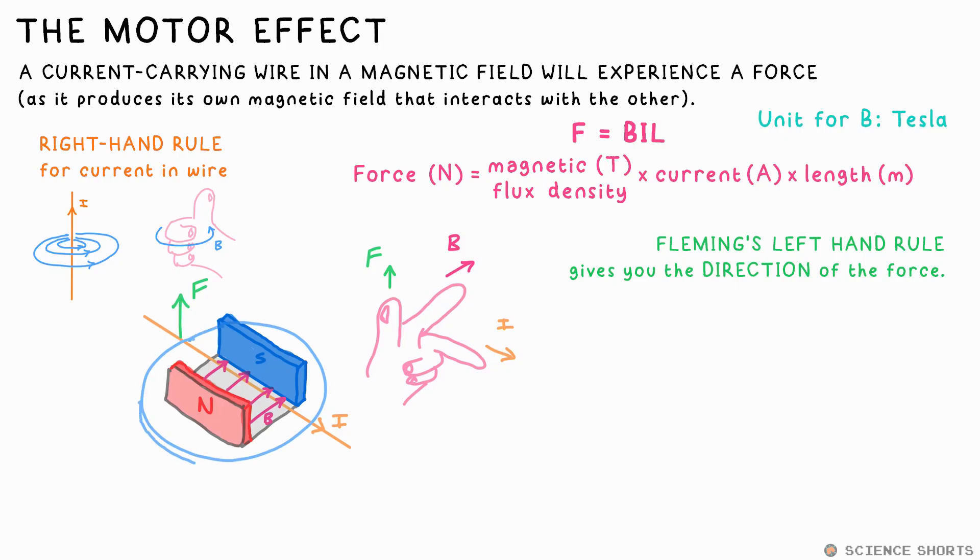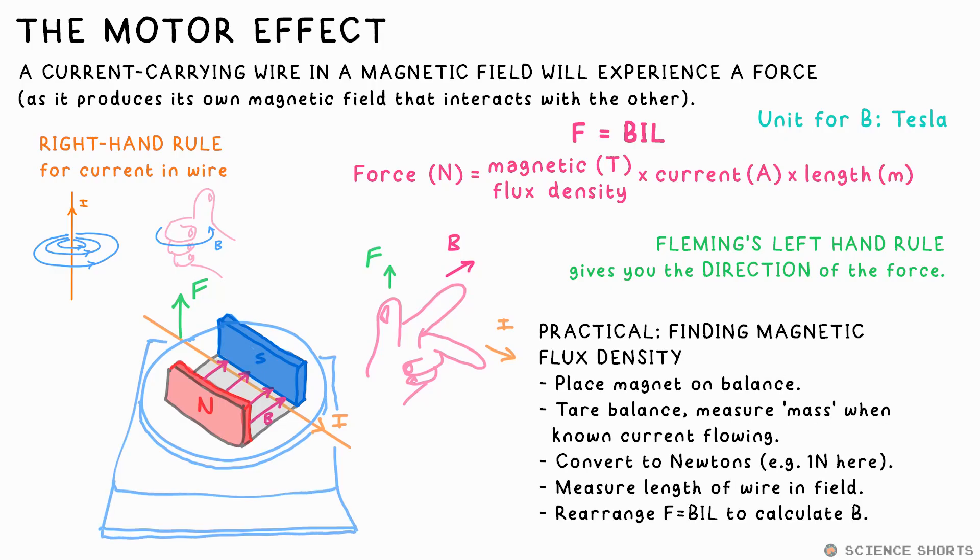In this case, it's upwards. To measure the size of this force in reality, we put the magnet on a balance. Due to Newton's third law, the magnet will also be pushed down with the same force. Calculate the force from the simulated mass measured, use an ammeter to get the current, and a ruler to measure the length of the wire, and you can calculate the magnetic flux density between the poles of your magnet by rearranging the equation.